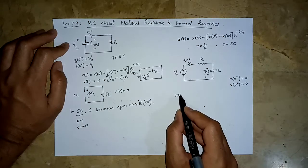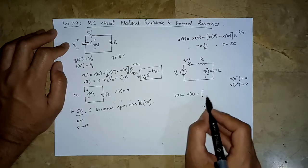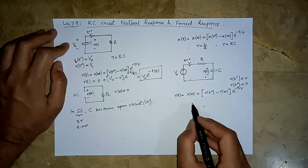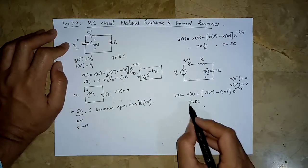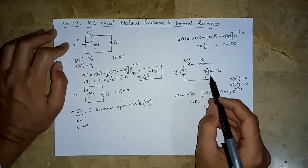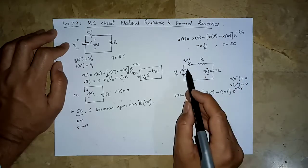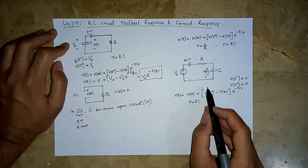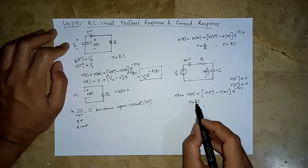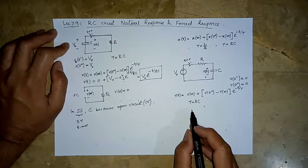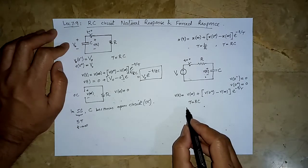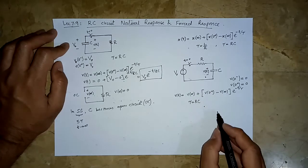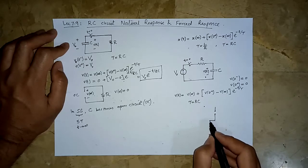We want to find the expression for V(t). There will be a steady-state component as well. Applying the general solution: V(t) equals V(infinity) plus V(0+) minus V(infinity), times e raised to the power minus t over tau. This is an RC circuit, so tau is RC. To find tau, short out all independent voltage sources, open the current sources, find the equivalent R and equivalent C, and tau equals that RC product.